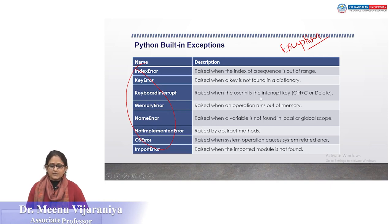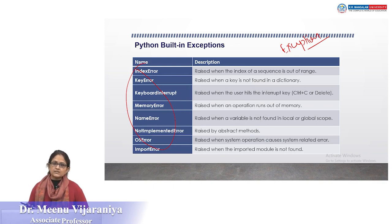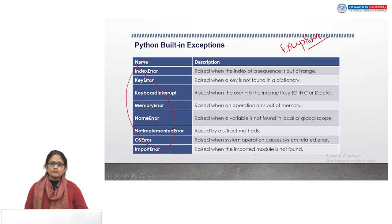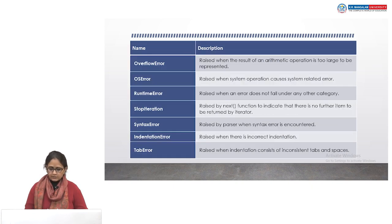KeyboardInterrupt is raised when the user hits the interrupt key. MemoryError occurs when you are trying to allocate memory but memory is not available. NameError is raised when a variable is not found in the global or local scope — if you try to access a variable you have not declared, the exception may be generated. OSError is raised when some system operation causes a system-related error. ImportError is raised when you try to import a library that cannot be found by your system. OverflowError is raised when the result of an arithmetic operation is too large to be represented.